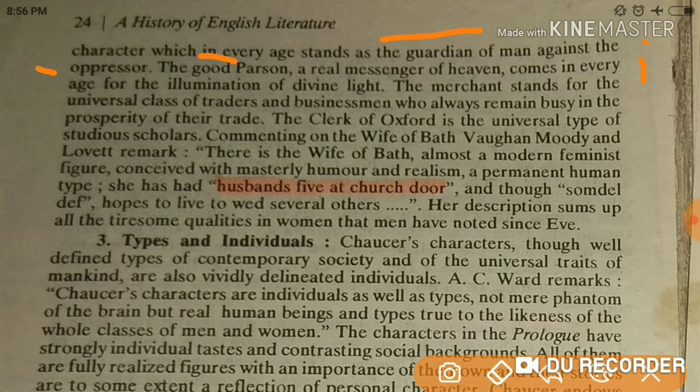The Knight comes in every age for the illumination of divine light. The Merchant stands for the universal class — universal type means you will find him in every place and every age. The Clerk of Oxford is the universal type of the studious scholar.